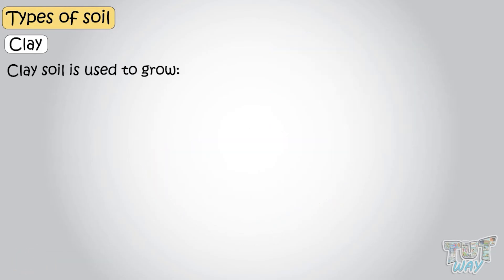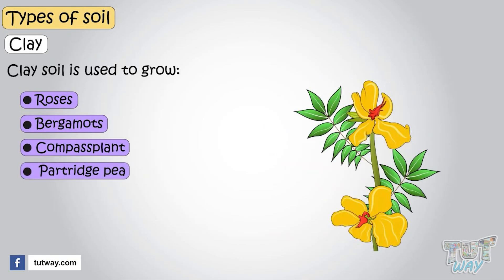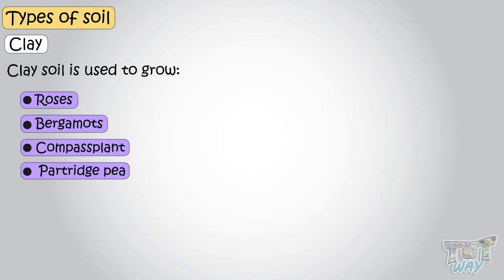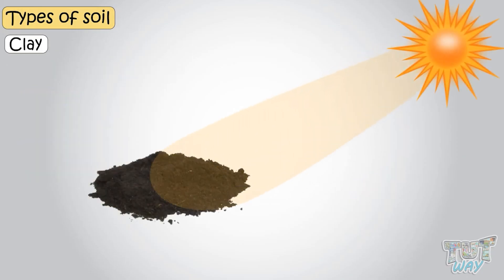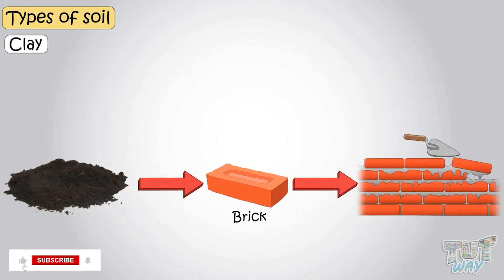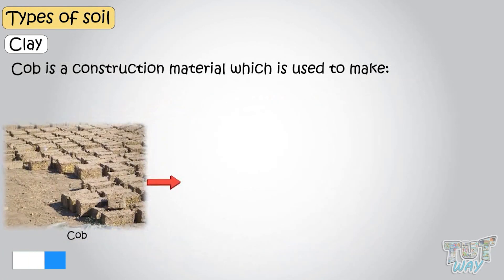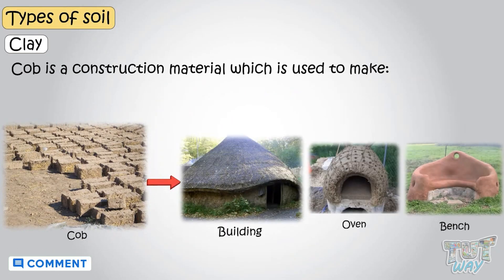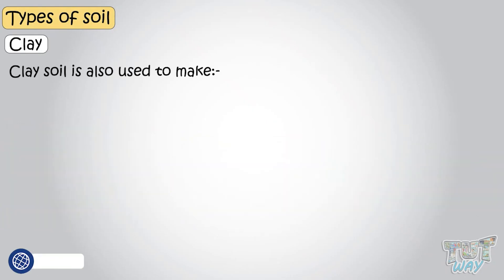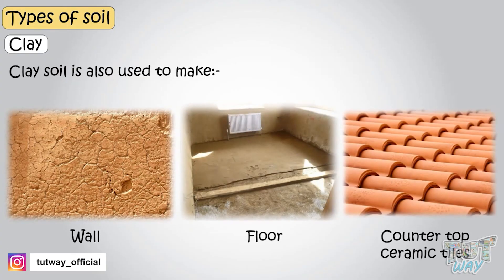Clay soil is used to grow roses, bergamots, compass plant, and partridge pea. Clay can be fired or dried in the sun to make bricks, which are then used in construction of buildings. Clay combined with straw and sand makes cob, and cob is a construction material which is used to make buildings, ovens, and benches. Clay soil is also used to make walls, floors, and countertop ceramic tiles.